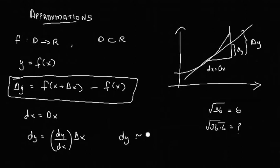dy is approximately equal to Δy. Using this approximation, we can write dy equal to Δy to find the approximate values of the function. This is the approximation method we are going to apply.